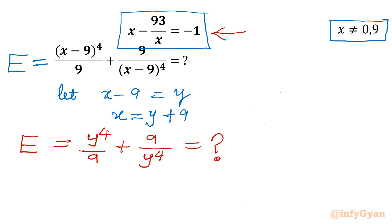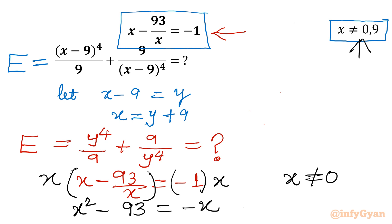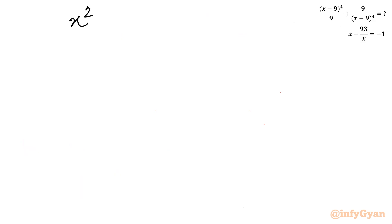Now let's come to the given equation. I will write x minus 9 times 3 over x equals negative 1. Since x cannot be 0, I can multiply both sides by x. This gives x squared minus 93 equals minus x. Rearranging, we get x squared plus x minus 93 equals 0.